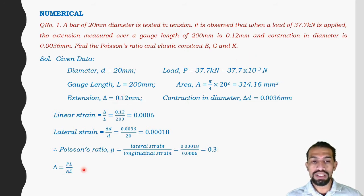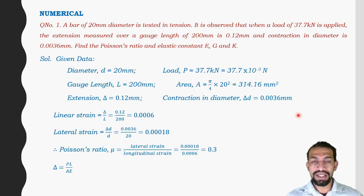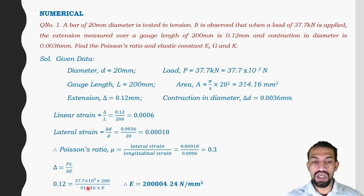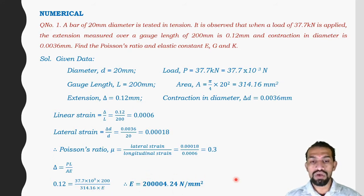For modulus of elasticity: change in length δ = 0.12 mm is known, load P is known, length L and area A are known. Substituting values into the formula and rearranging to solve for E, Young's modulus E = 200,004.24 N/mm².